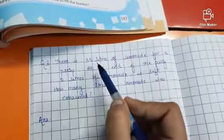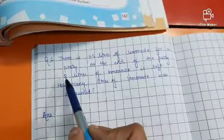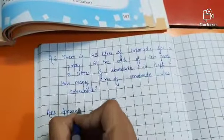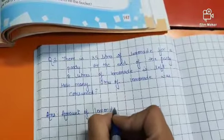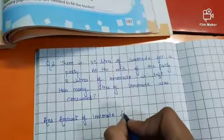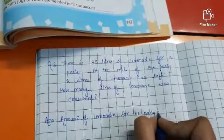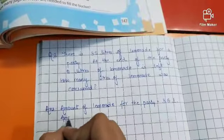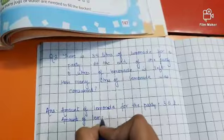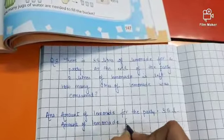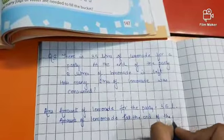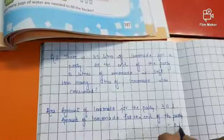So total amount of lemonade was 35, and now how much is left? At the end of the party, 8 liters. So we'll subtract 8 from 35. Amount of lemonade for the party, 35 liters. Then amount of lemonade at the end of the party, 8 liters. Now subtract 8 from 35.